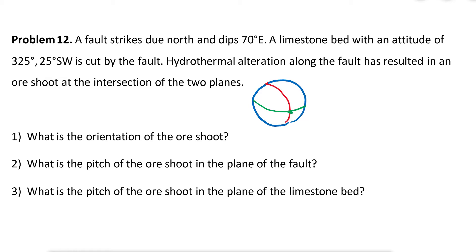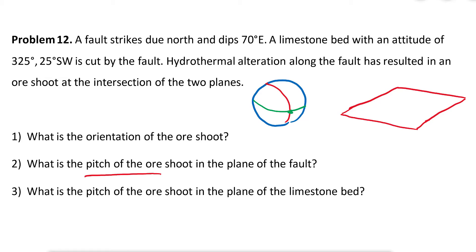Here we have a new term we haven't talked about yet: pitch. There are two different ways to write down the attitude of the orshoot. One is the independent trend and plunge, and the other is writing the pitch of the orshoot on the fault plane or limestone bed. The orshoot is a linear feature lying on that fault plane.